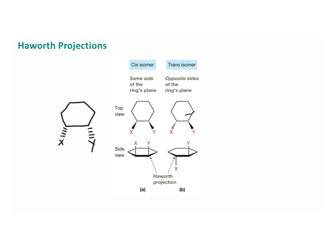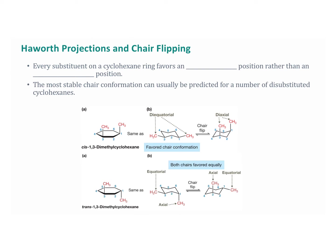Looking at Haworth projections and cis and trans: because each substituent on a cyclohexane ring is more stable in the equatorial position compared to the axial position, we can predict the more stable conformation of a number of disubstituted cyclohexanes. In this example of cis-1,3-dimethylcyclohexane, we have a chair conformation where both groups are equatorial — that's the favored chair conformation. When you do a chair flip, all of a sudden both of these are diaxial, so due to steric strain that conformation is not as favored.